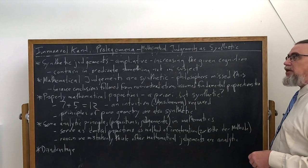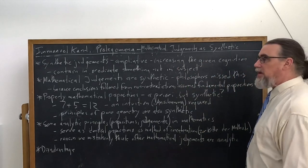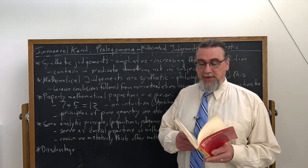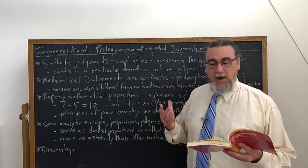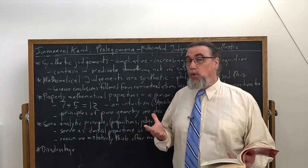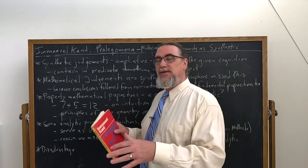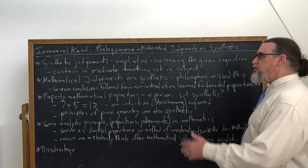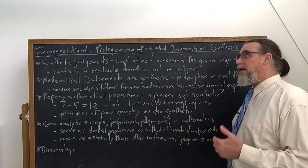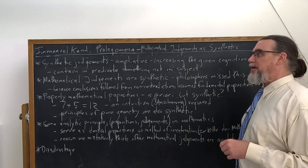Kant thinks that mathematical judgments are not empirical, but they are, in fact, synthetic. And he thinks that a lot of philosophers missed this, and this is a big problem. He says that this fact seems hitherto to have altogether escaped the observation of those who have analyzed human reason. It seems even directly opposed to their conjectures. So not only did they miss it, they went the wrong direction, thinking that all mathematical judgments are, in fact, analytic, when in the reality of things, they are mostly going to be synthetic. The ones that are truly or properly mathematical will be.